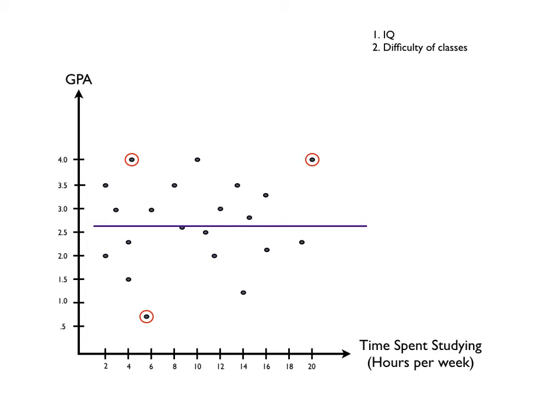We can also control for the difficulty of classes. Some students take very easy courses, some students take more difficult courses. If we could have a metric or some quantitative scale that we could measure the difficulty of classes, we could then control for difficulty of classes. We also might want to look at SAT score. SAT score is not a measure of intelligence, but it is a measure of how prepared you are for a first year in college. And if we control for SAT score, we can get a little more meaningful results.